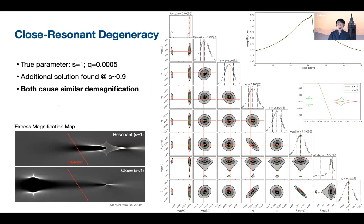And in this example, a resonant caustic event is simulated with s equals 1 and q equals 5 times 10 to the minus 4. The corner plot clearly shows a bimodal solution with a degenerate solution at s less than 1 with a closed topology. The input light curve is shown in the upper right corner together with the two inferred light curves. As you can see, all three are hardly distinguishable.